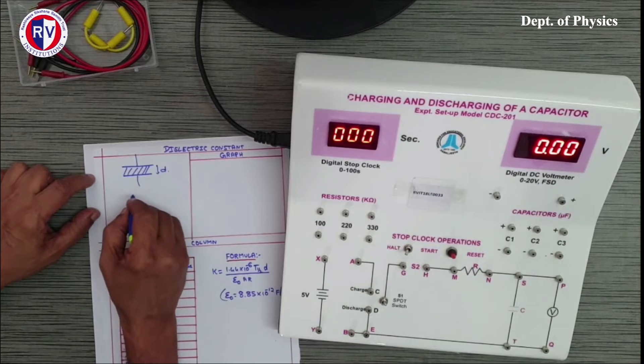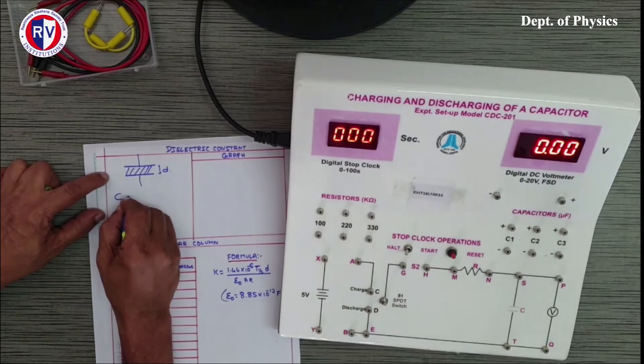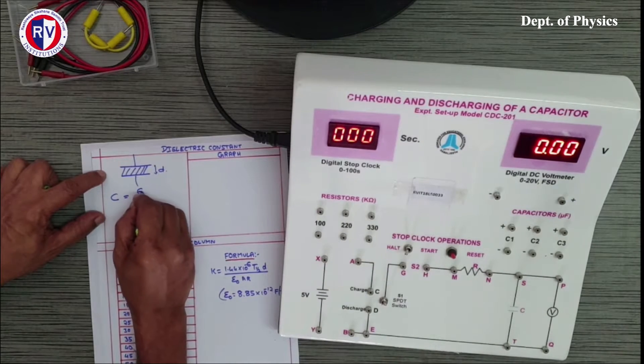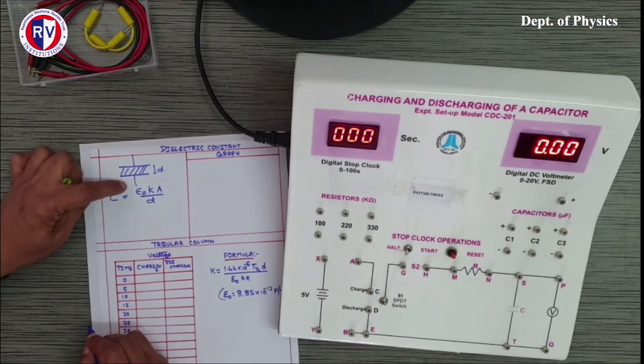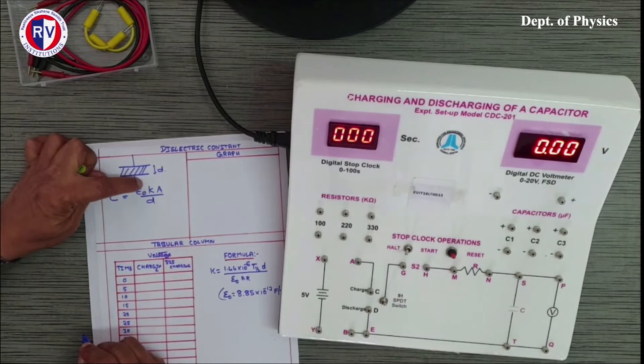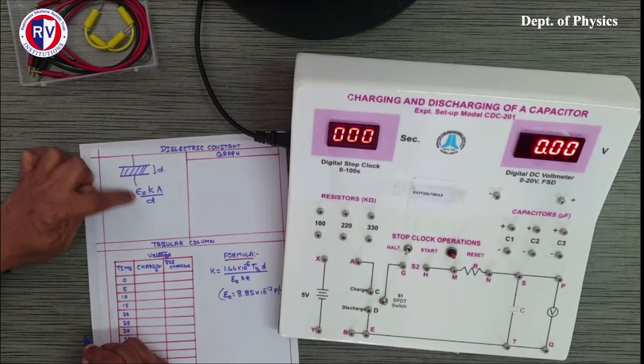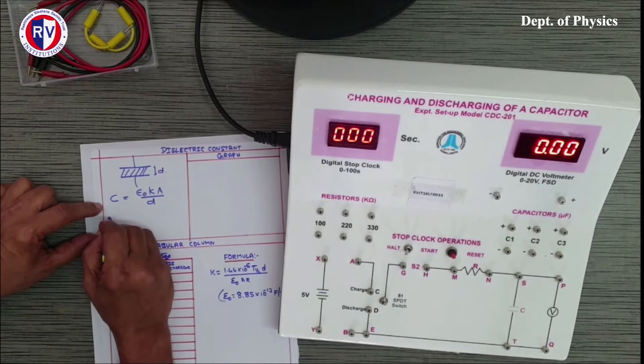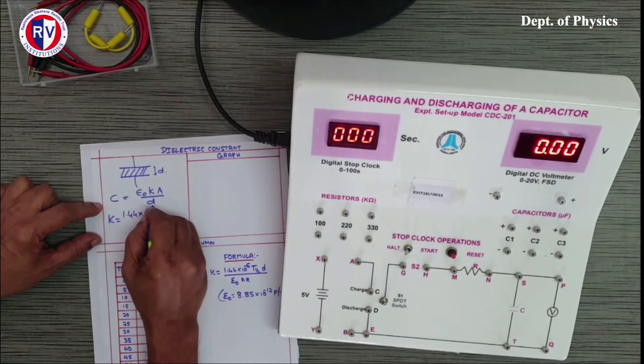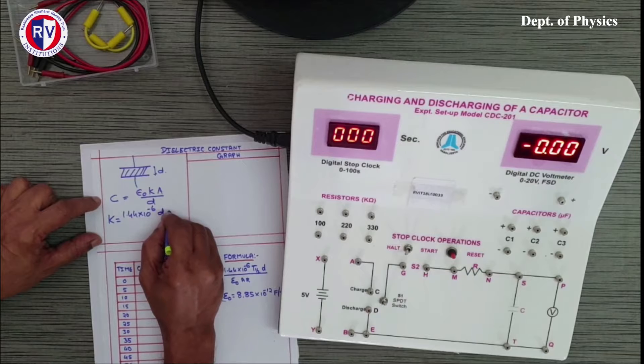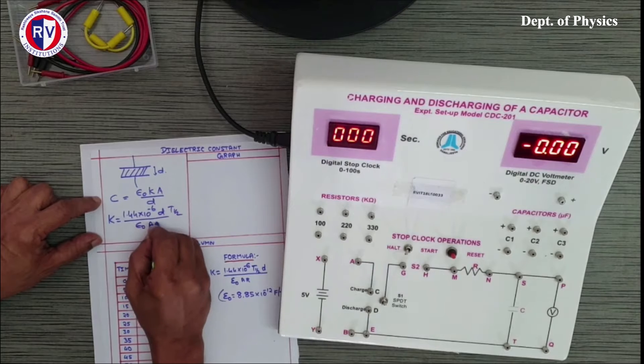When the dielectric is placed in the space between the plates of the capacitor, the capacitance value we can write as C is epsilon_0 k A by d. Epsilon_0 is the permittivity of free space, k is called the dielectric constant, A is the area of the dielectric, and d is the thickness.